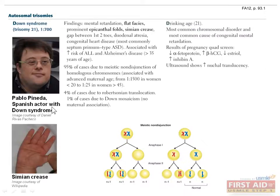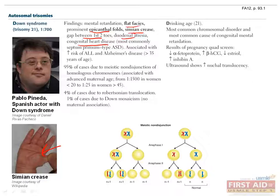Down syndrome is the most common, with a prevalence of 1 in 700 people, and is the most common cause of mental retardation. Patients often have several classic characteristics including flat faces, prominent epicanthal folds, and a simian crease, which means there's only one fold in the skin across the palm. They can also have a gap between the first two toes, duodenal atresia, and congenital heart disease, and have an increased risk of acute lymphoblastic leukemia and Alzheimer's disease, which they can get at a young age.